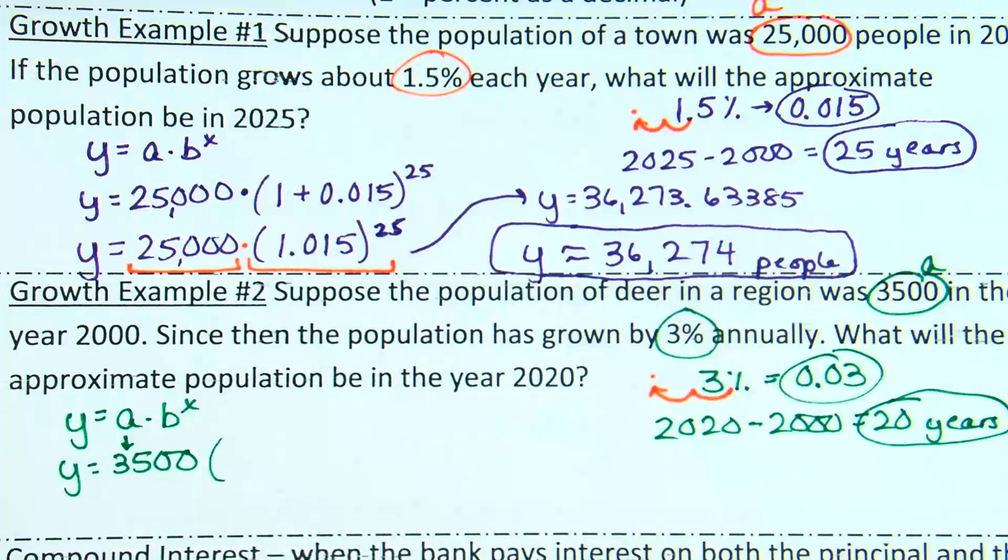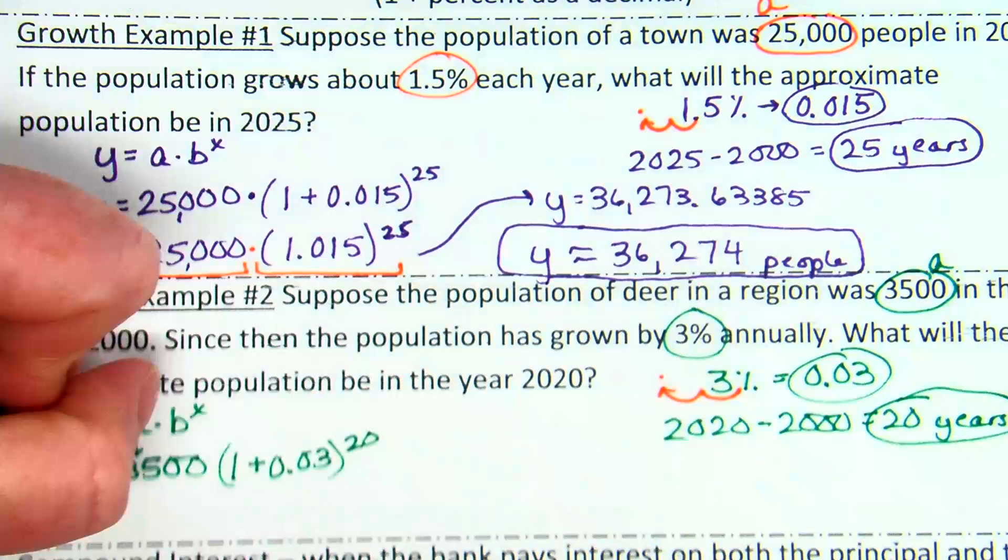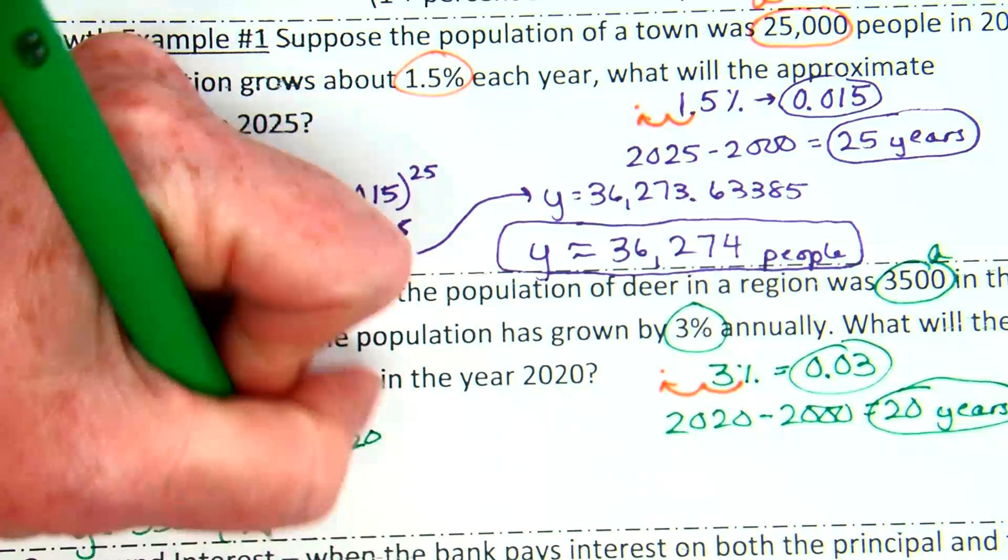Okay. So, I already put in 3,500 for A. For B, remember, it's 1, and since it's growing, we're going to say 1 plus the decimal. So, 1 plus 0.03 raised to the power of time, which is 20. I like to clean this up before I put it in the calculator. 3,500 times, instead of 1 plus, what is 1 plus 0.03? 1.03 raised to the 20th.